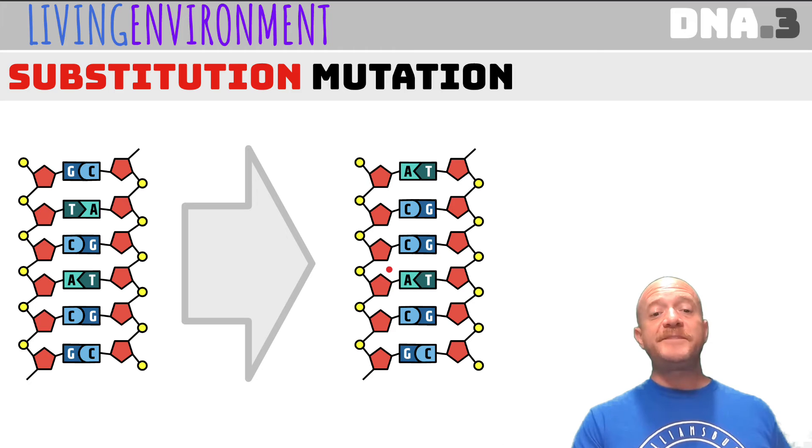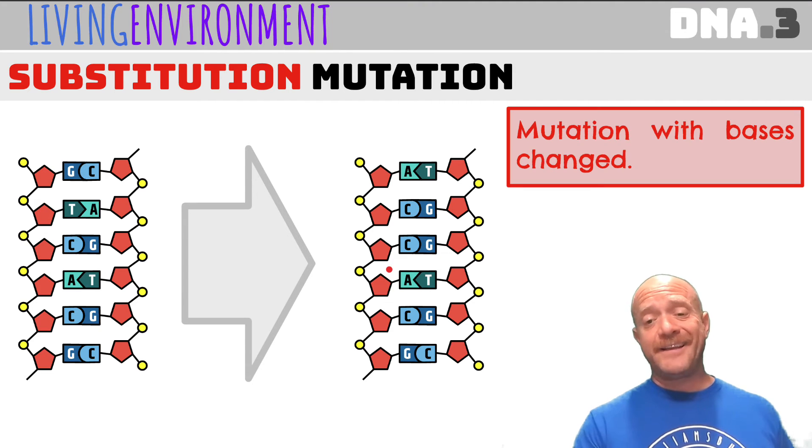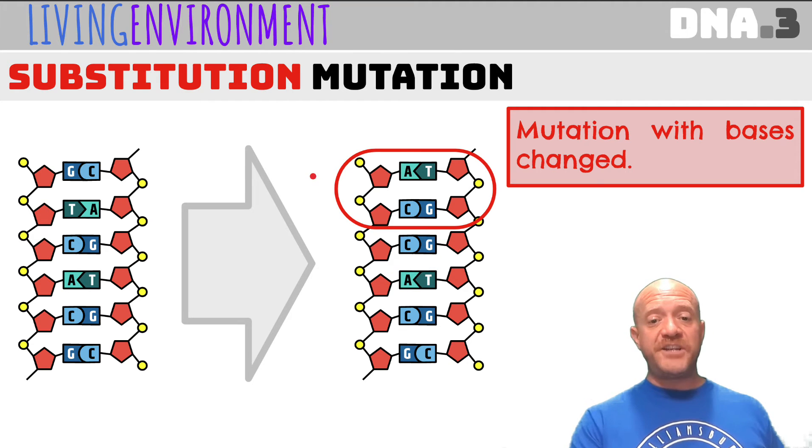And a substitution mutation is just like it seems. It's a mutation with bases that are changed. These were changed. It went from GC to AT, TA to CG. Those bases were changed.